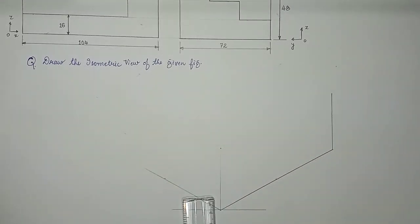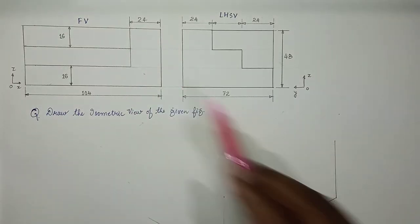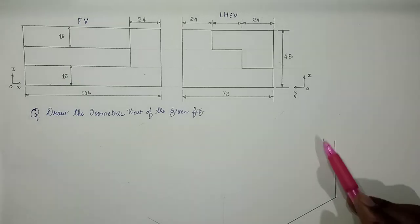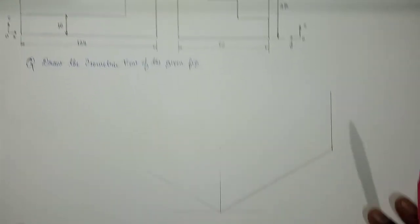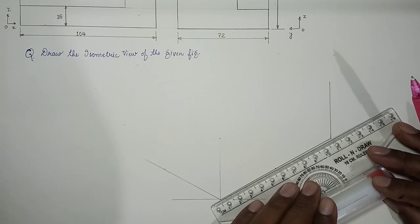In the front view, this is how much? 24 mm. So from here we need to mark 24 along x-axis. So we draw a parallel line.